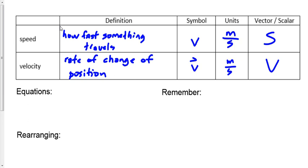Let's write down a couple of equations. Speed V equals distance over time. Velocity V-with-arrow equals displacement over time. Velocity is defined as the rate of change of position; change in position is displacement, so it's displacement over time. Anything that's a rate has time on the bottom, so if it's the rate of displacement, it's displacement over time.